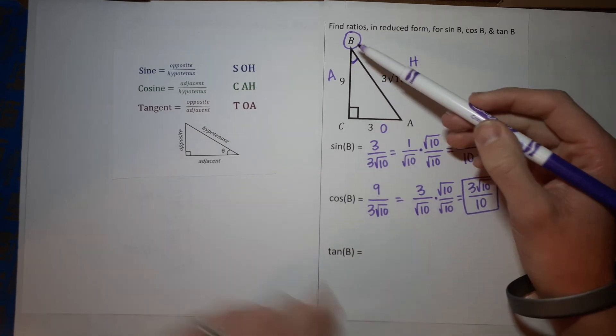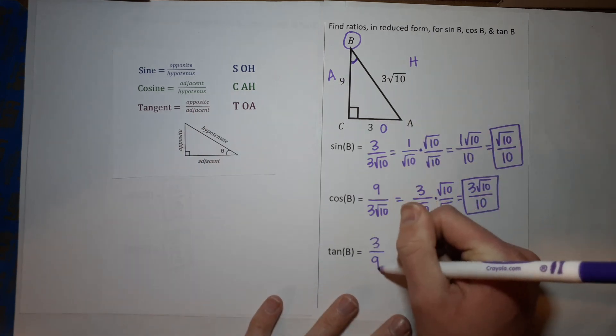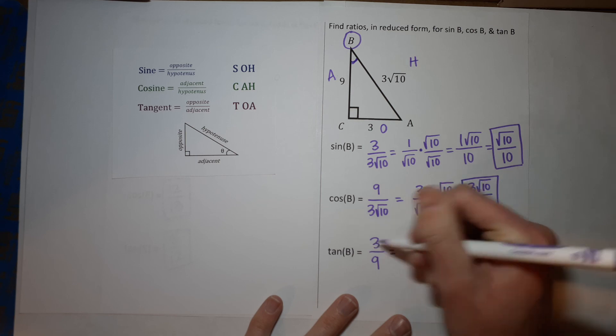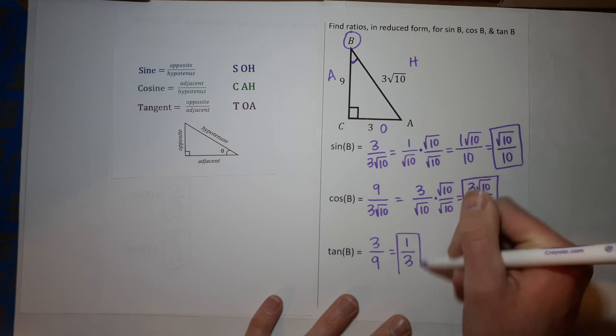Alright, tangent of B is opposite over adjacent, so 3 over 9, which can simplify. 3 goes into 3 once, 3 goes into 9 three times, and that is my tangent. Okay, we're done!